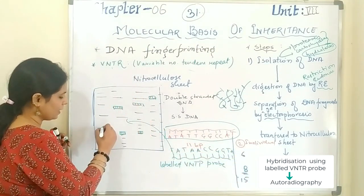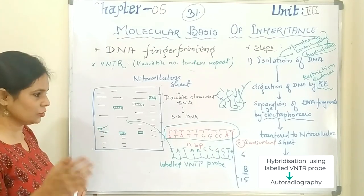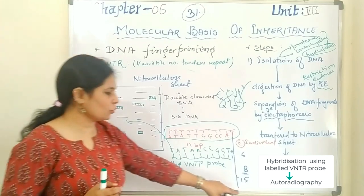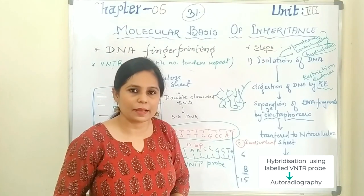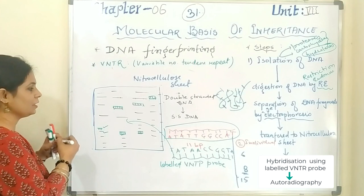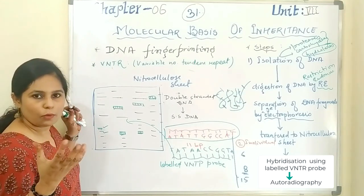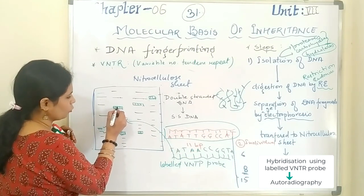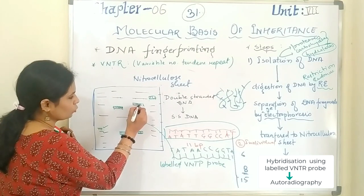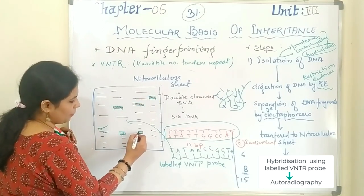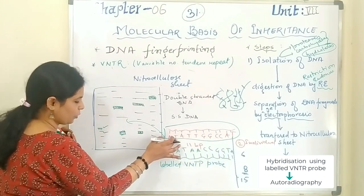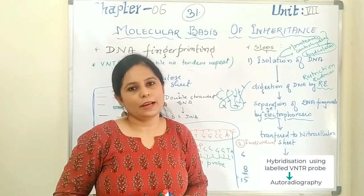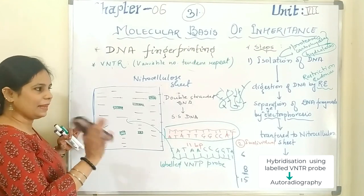It is called hybridization because one molecule is the DNA and the other is the probe. After hybridization, you cannot see anything on the sheet directly, so you have to put it under autoradiography. You apply radiation, and in the presence of radiation these repeating units will glow — they will fluoresce. So you can see that the repeating unit appears once, twice, three times, four times, five times. For example, a sequence is repeating 4 times here, 3 times here, 4 times here, and 5 times there. This data became visible when we subjected it to autoradiography.